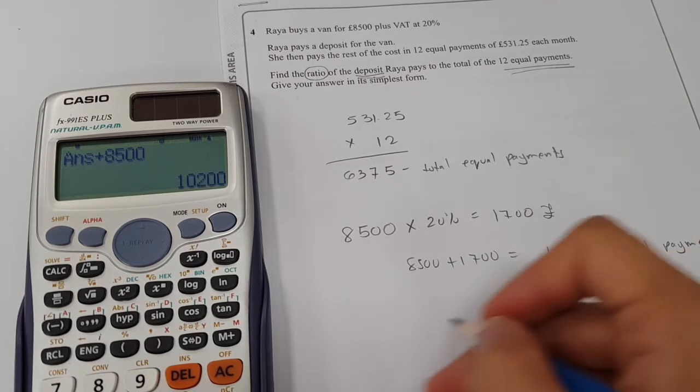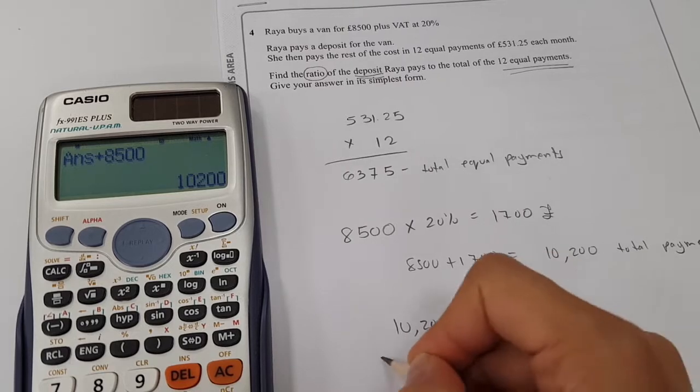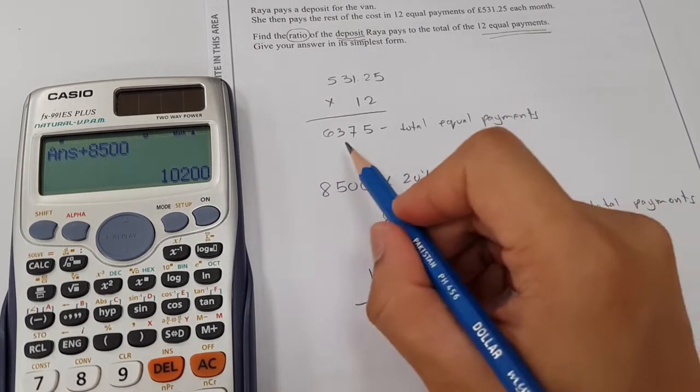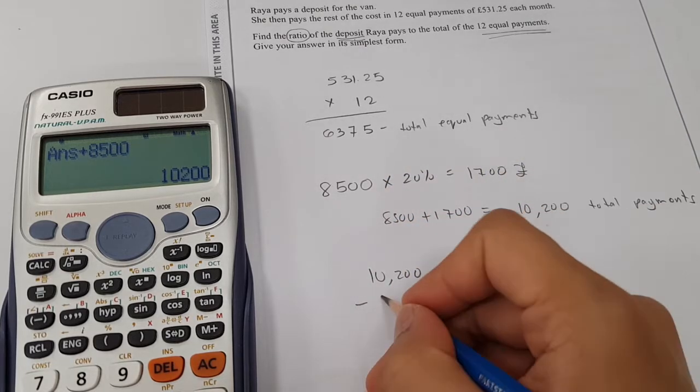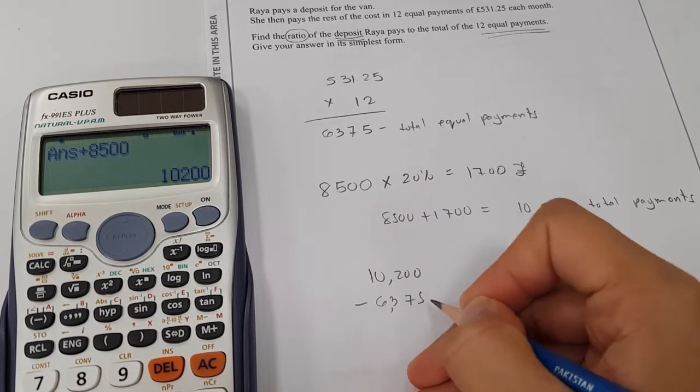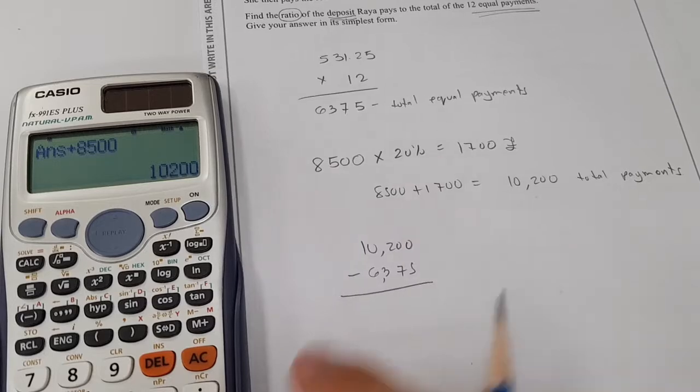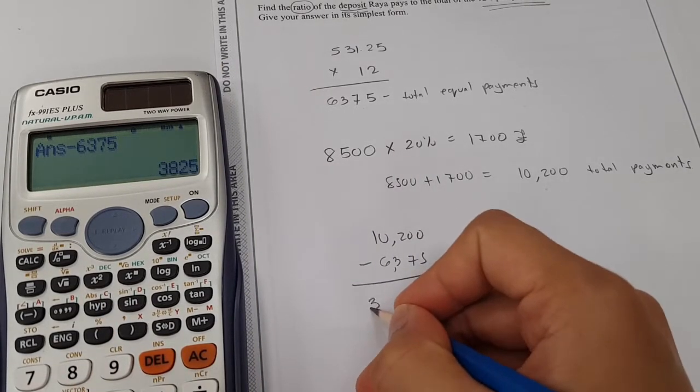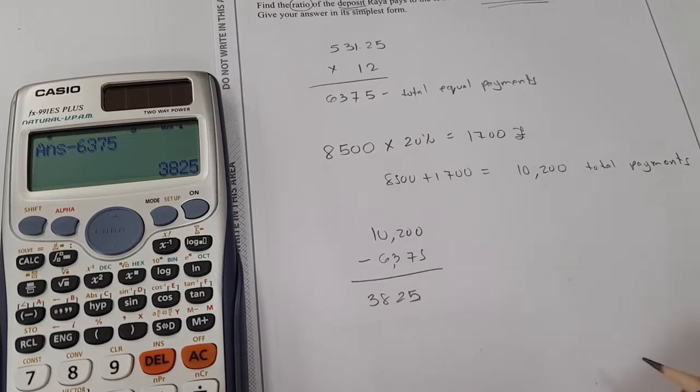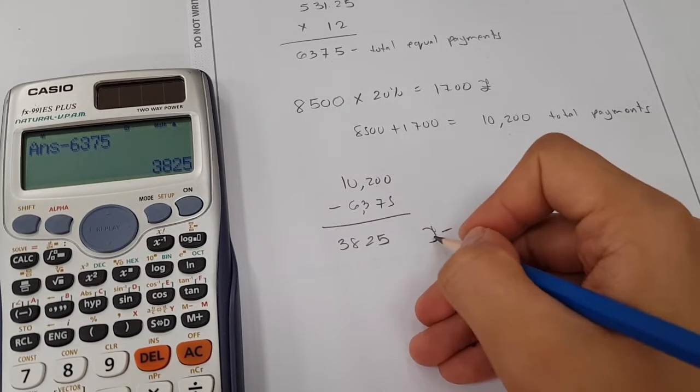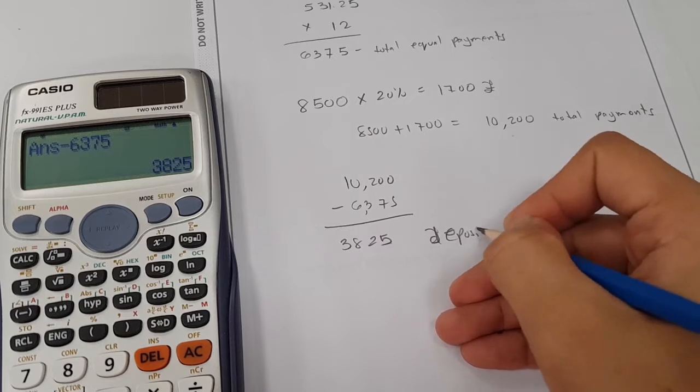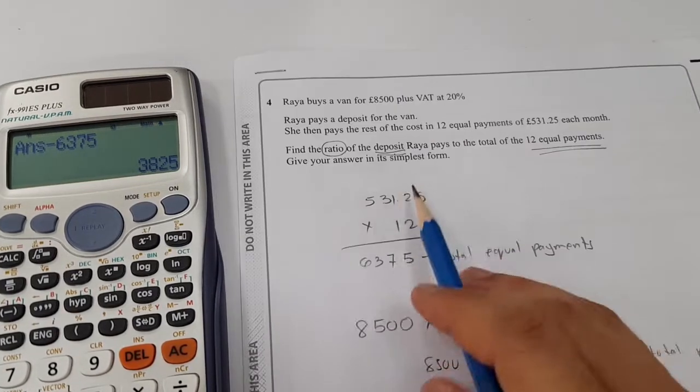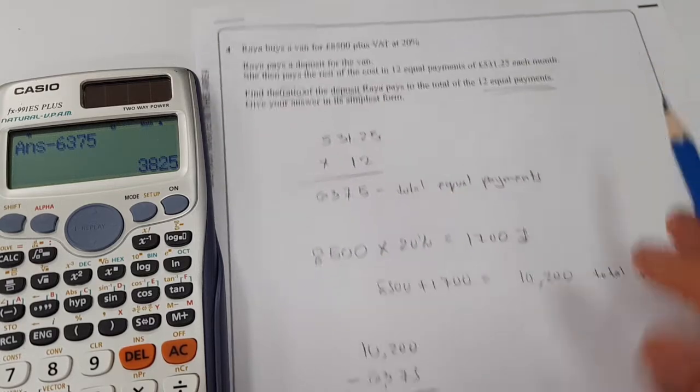From these total payments, we just have to minus the amount of equal payments for the 12 months in order to get our deposit. So minus, and I've got £3,825. So it means Raya deposited this amount, and now we're going to find the ratio of the deposit to the 12 equal payments.